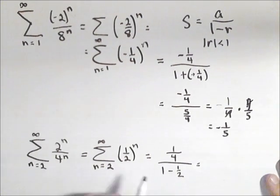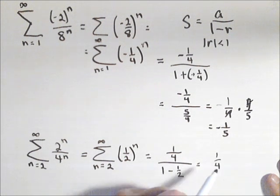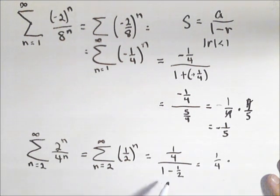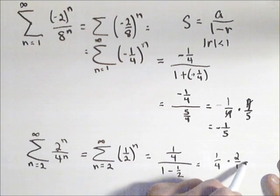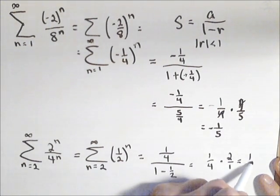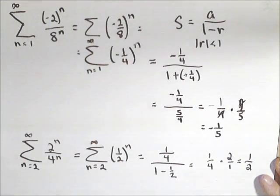Which equals one-fourth times, that's one-half. Flip and multiply, two over one equals two over four, or one-half.